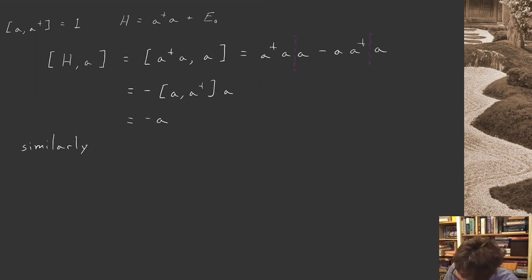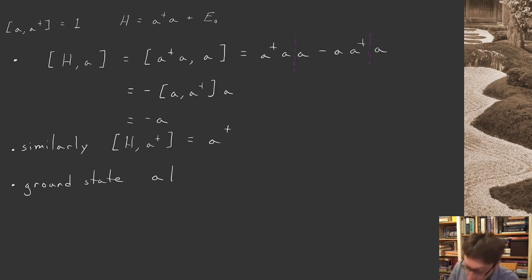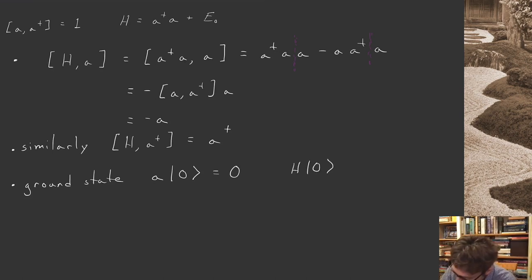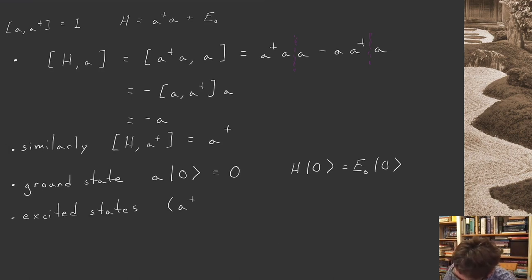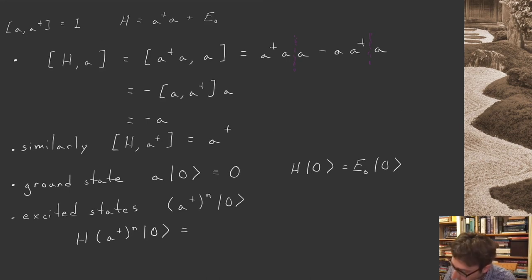Because of that, and because of the structure of the Hamiltonian, if I act with the Hamiltonian on the ground state I get e-naught times the ground state. There are furthermore excited states which I get by acting with the raising operators — n of them — on the ground state. And if I act with the Hamiltonian on this excited state, after some commutation relations I'll find that this new state has eigenvalue e-naught plus n.